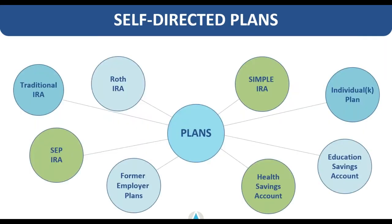There are a number of different plans that you can self-direct — it doesn't have to be just a standard traditional IRA. You can also self-direct a Roth IRA. SEP and SIMPLE IRAs are products keyed for certain types of investors. We also have health savings accounts, education savings accounts, and solo 401K plans. If you're a small business owner or have any self-employment income, those types of plans may apply to you. Feel free to reach out to us or check out our website under the 'account types' tab to find what fits your needs.